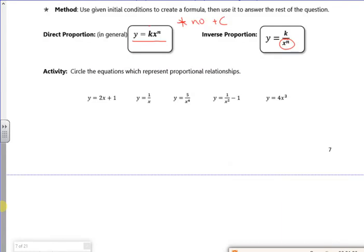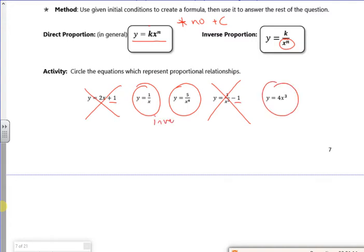Let's have a look at these. So that one isn't because of the plus one. That one is, that one is, that one isn't because of the minus one, that one is. So these two are both inverse and that one's just direct.